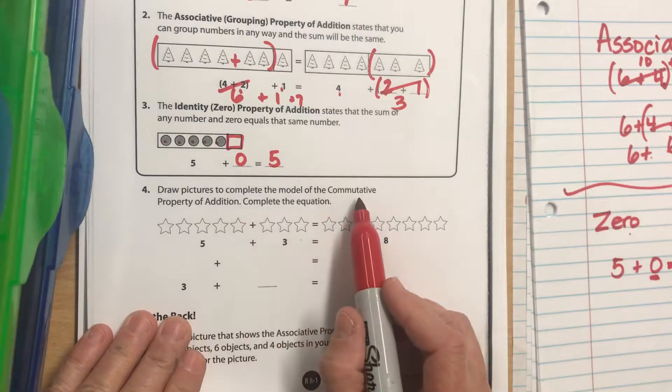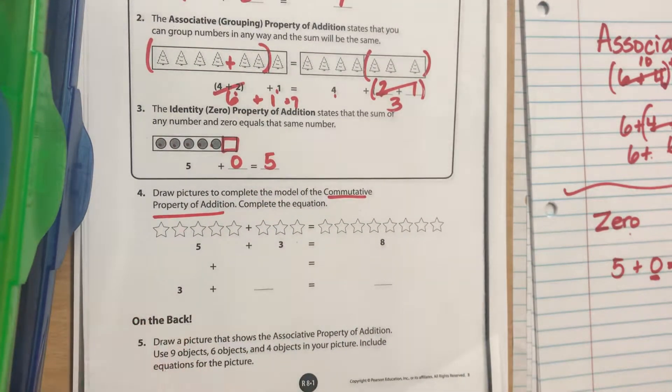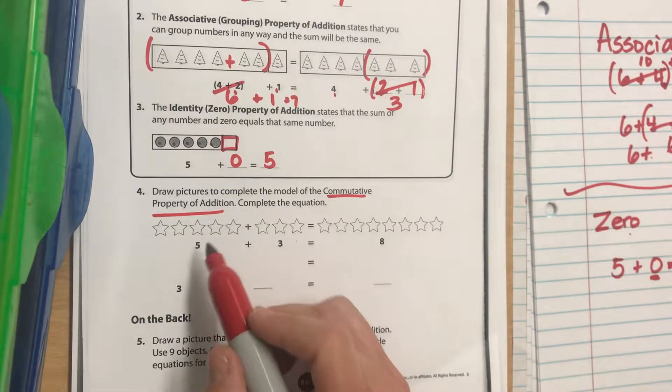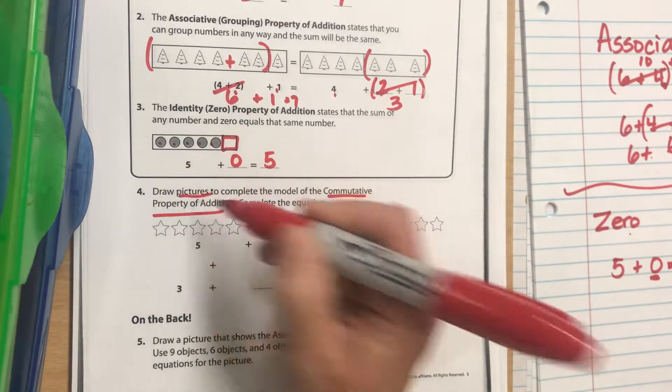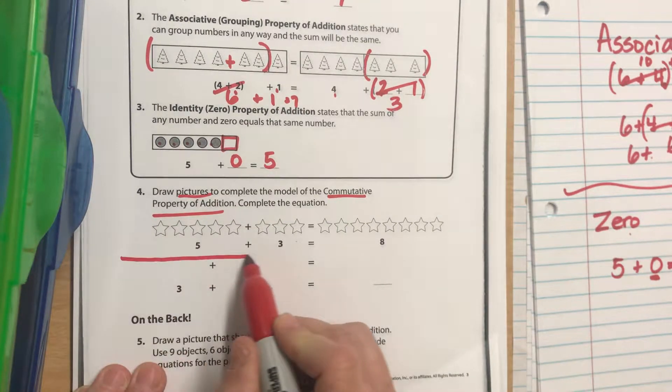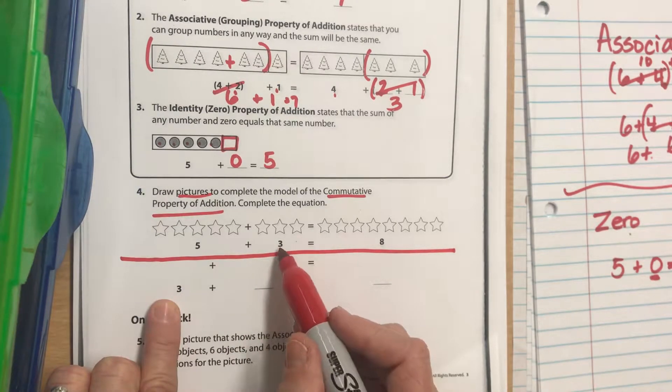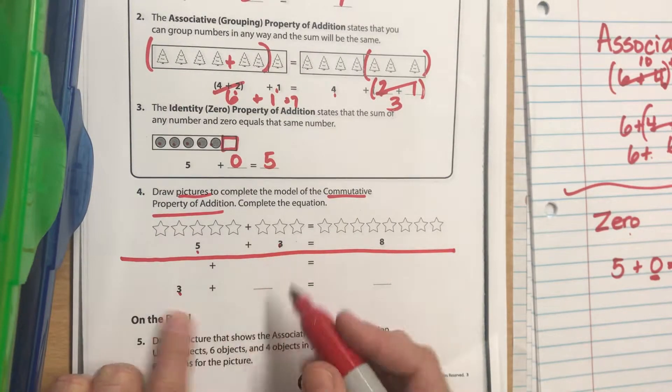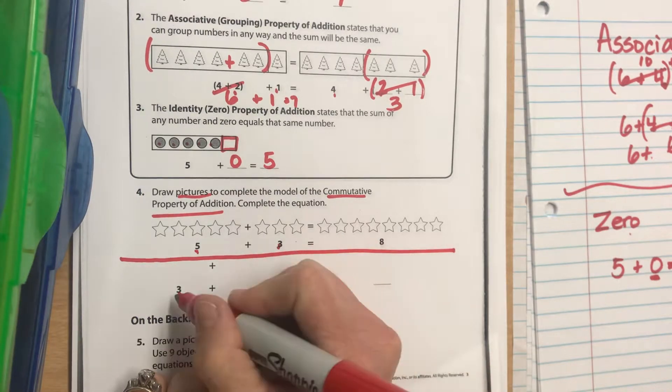Draw pictures to complete the model of the commutative property of addition. Commutative means flip-flop, so you have 5 plus 3 equals 8. They want you to draw pictures, so draw stars. This is one way to do the problem. Now they want you to flip-flop: instead of 5 plus 3, you're going to do 3 plus what? Write the correct number there.